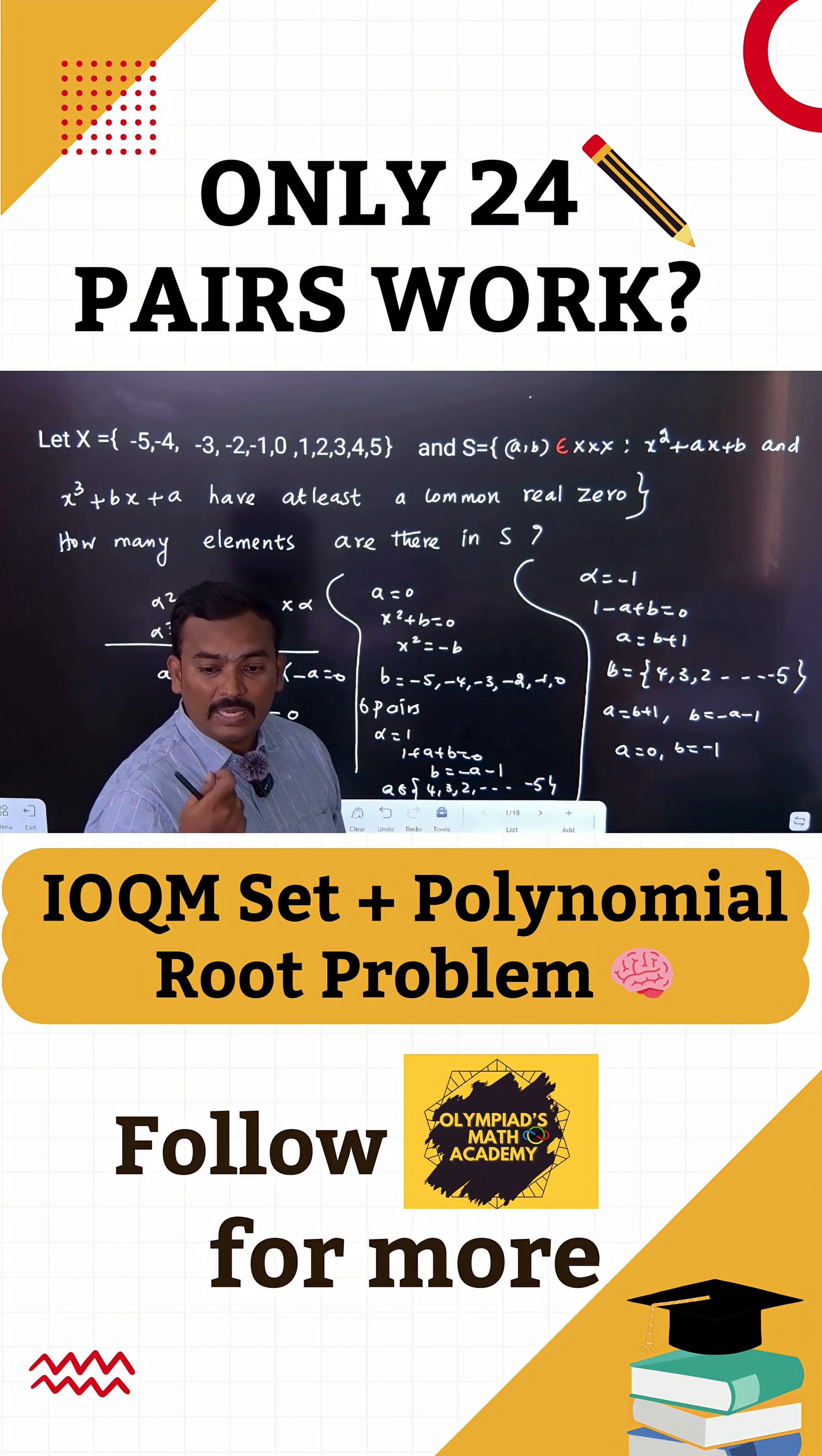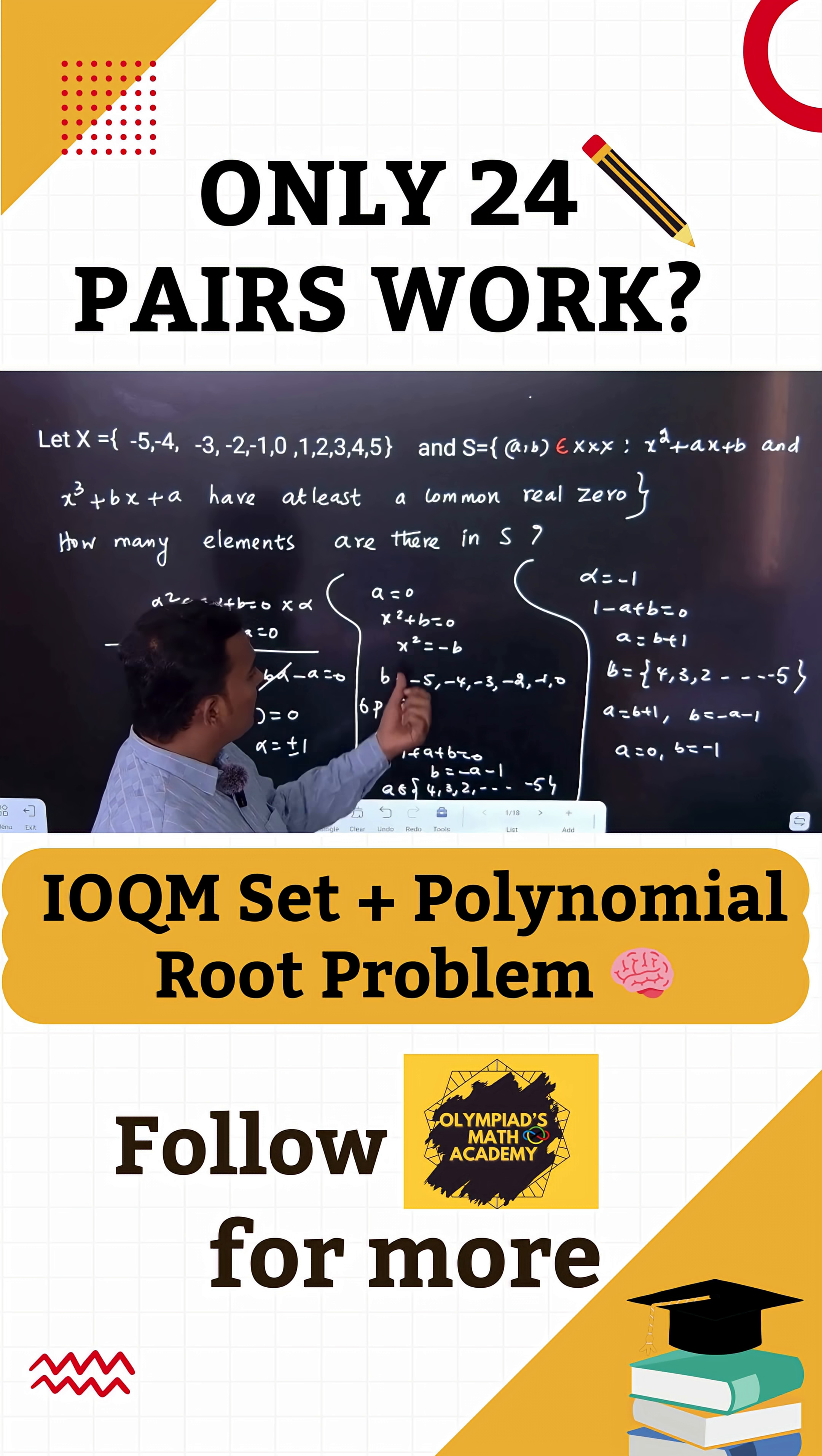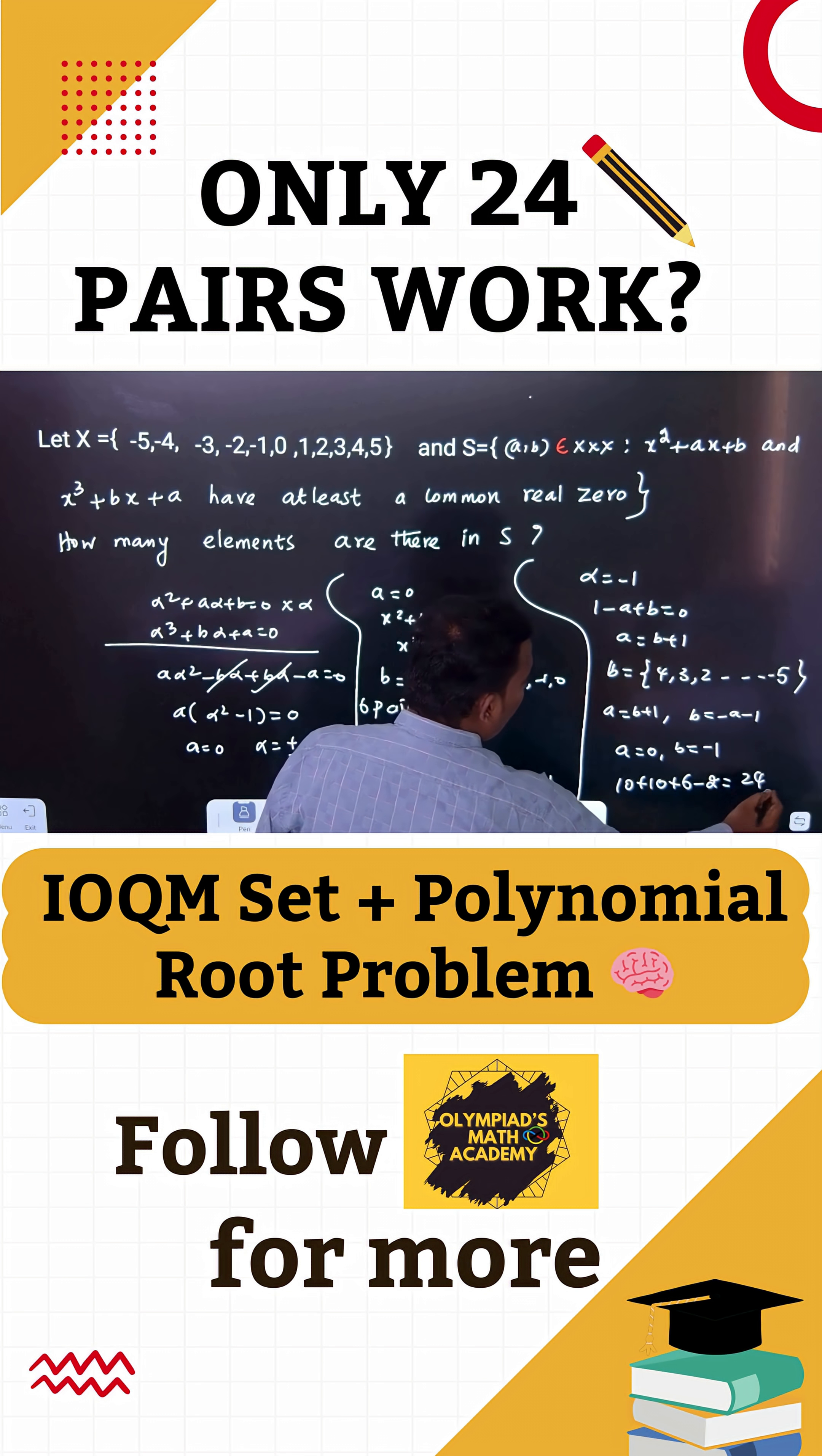There are 26 total possibilities: here 10, here 10, here 6, total 26. But you have to remove the duplicate (0, -1). We need (0, -1) only once. Therefore, 10 plus 10 plus 6 minus 2, that is 24 pairs possible.